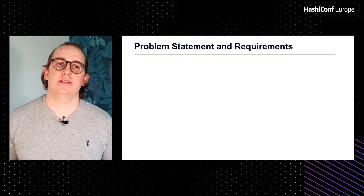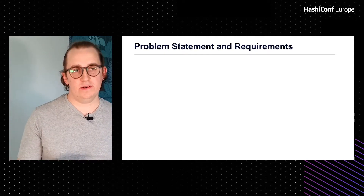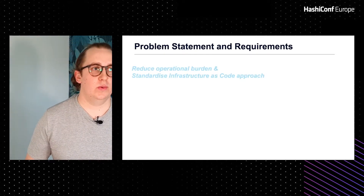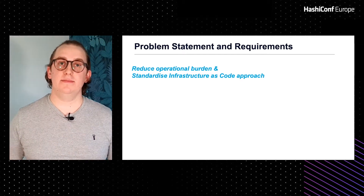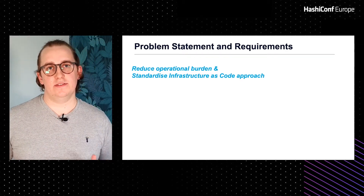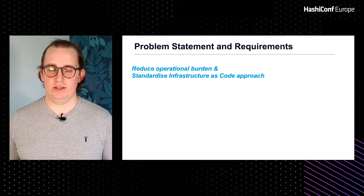We reached the tipping point. Our monolithic repository was nearing 23,000 lines of code and it was just painful to use. Given those challenges, a decision was made to begin a body of work whose goal was ultimately to correct the previous design and implementation missteps. The main focus was reducing operational burden on the IAM team and standardizing the infrastructure as code approaches used when consuming Vault.